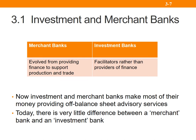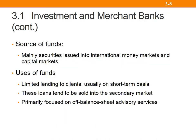Investment banks make most of their money by providing advisory services, which are off balance sheet. There is very little difference between what a merchant bank and an investment bank does, and these terms are effectively used interchangeably. Investment banks get their money mainly from issuing securities into money markets as well as capital markets — remembering that money markets are for short-term securities and capital markets are for longer-term securities.